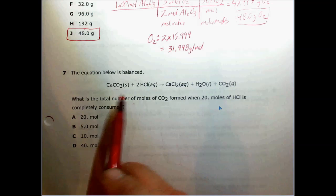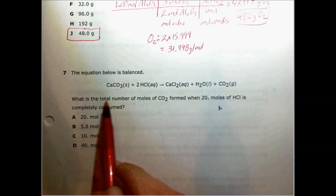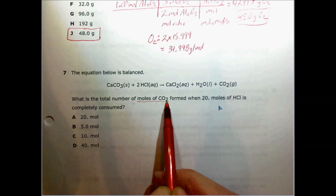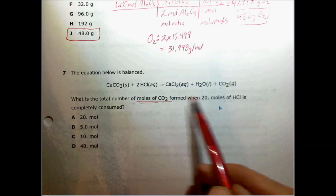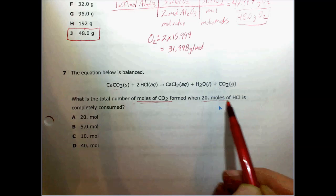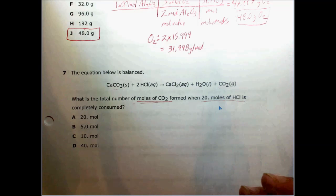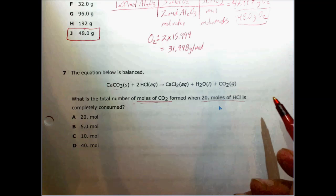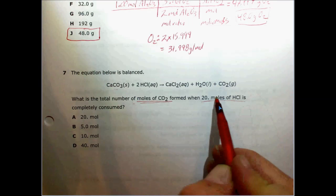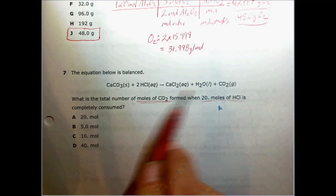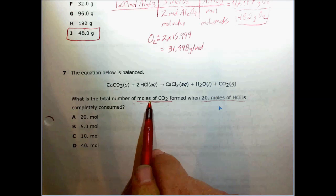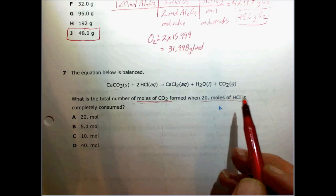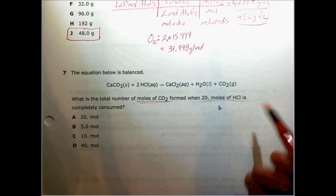The hydrogen is also reacting to form water. The question asks: what is the total number of moles of CO2 formed when 20 moles of HCl is completely consumed? This is stoichiometry in its simplest form — we start with moles and end with moles, so all we need is a mole ratio.